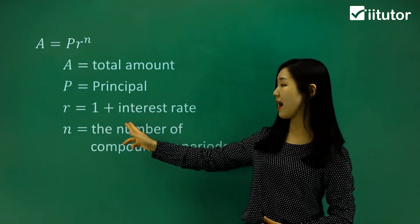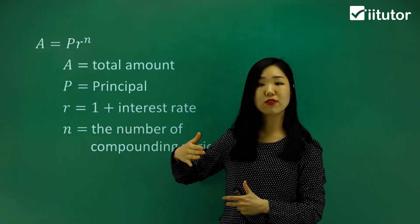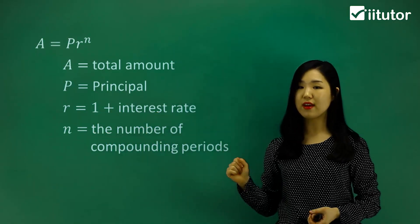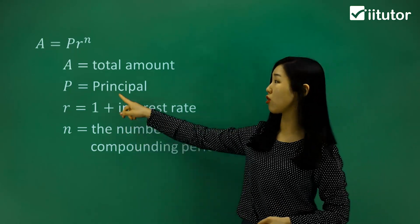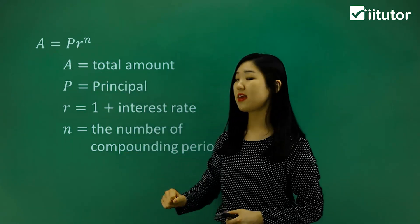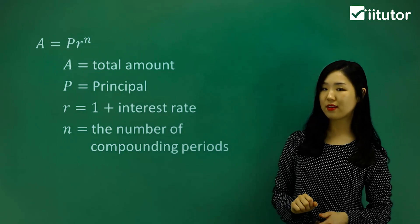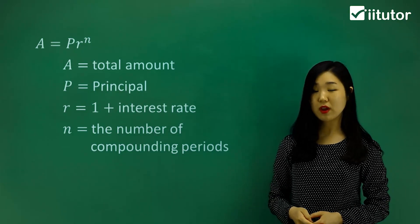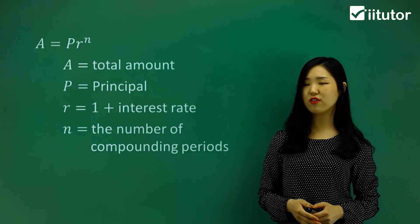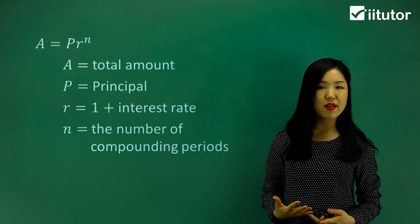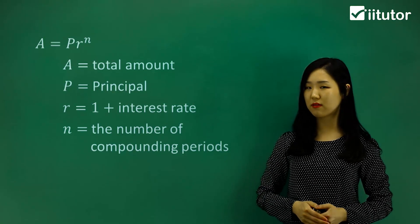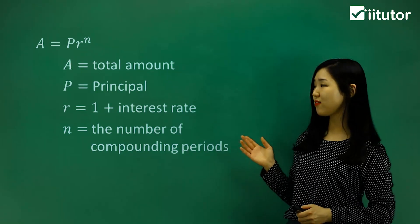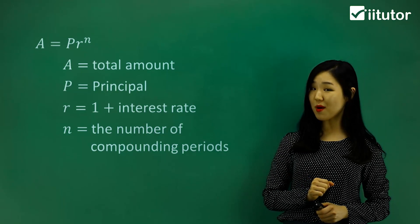We add one to ensure the amount goes up, so you do one (which is 100%) plus that interest rate, and that will be your value of R. N is of course the number of compounding periods — how many periods you're going to be compounding for. Focus on the periods in terms of months, years, or quarters, and make sure you know what each term represents. Using this formula, we're going to try some questions involving compound interest.